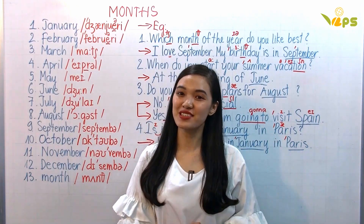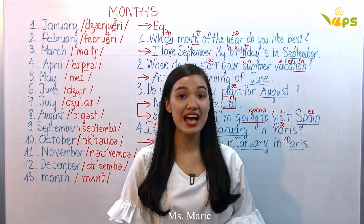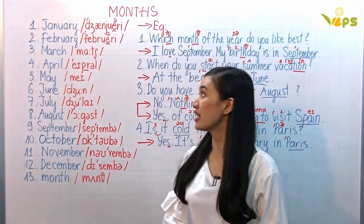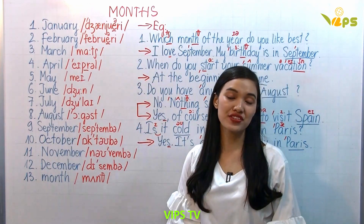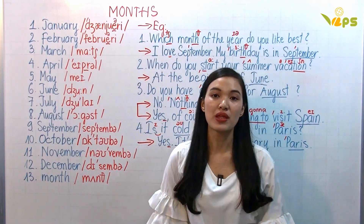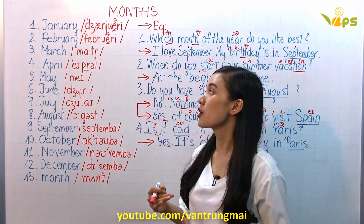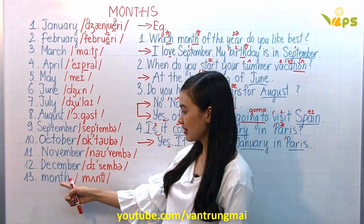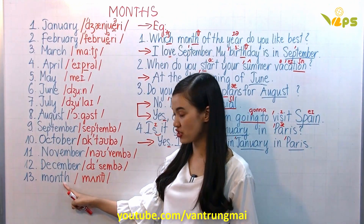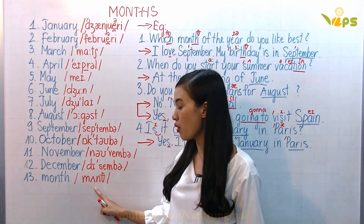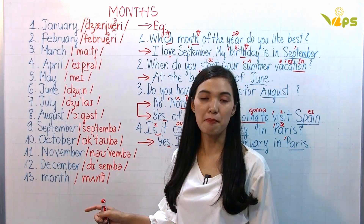Hi there, this is Mary from VIPS TV. Today we're going to study about months — months of the year. There are 12 months in the year. So let's study about them. This is 'month.' Remember the TH here — time between your teeth. Month.